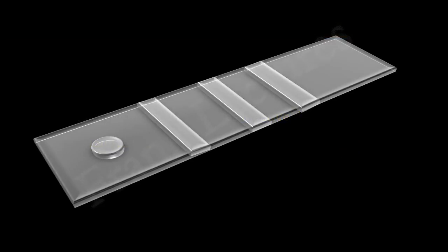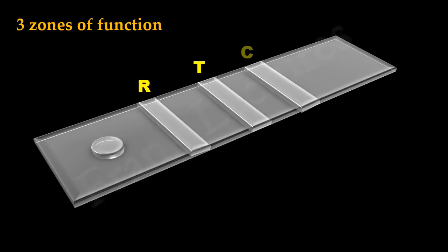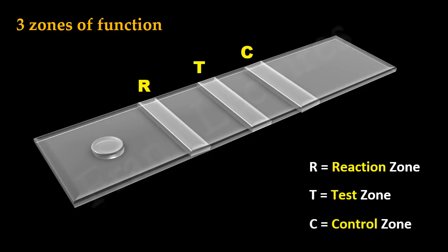A pregnancy test strip has three zones of function. These zones are designated as R, T, and C. R stands for the reaction zone, T stands for the test zone, and C stands for the control zone.